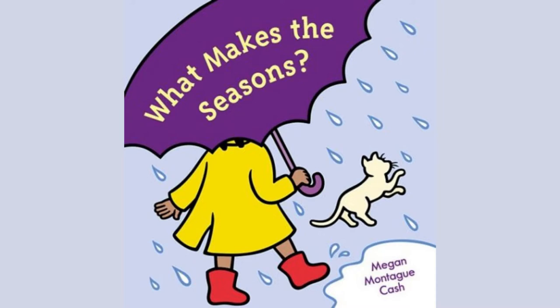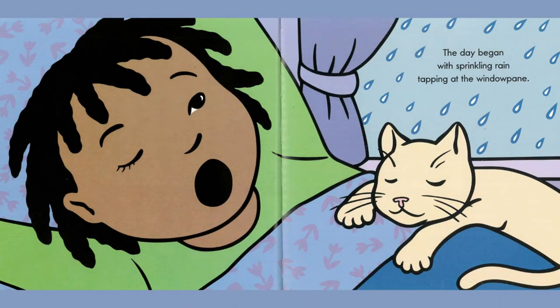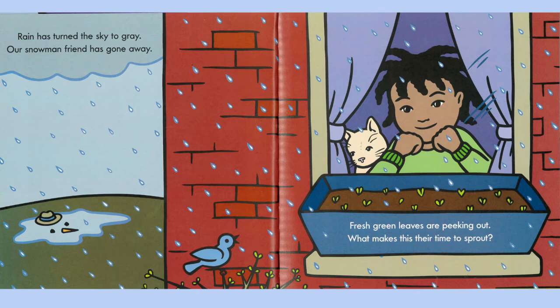What Makes the Seasons by Megan Montague Cash. The day began with sprinkling rain, tapping at the window pane. Rain has turned the sky to gray. Our snowman friend has gone away. Fresh green leaves are peeking out.